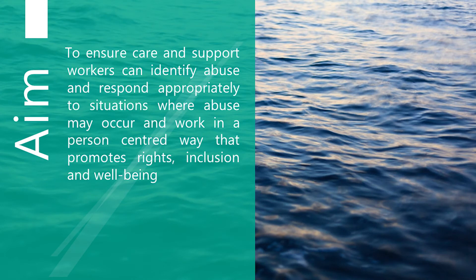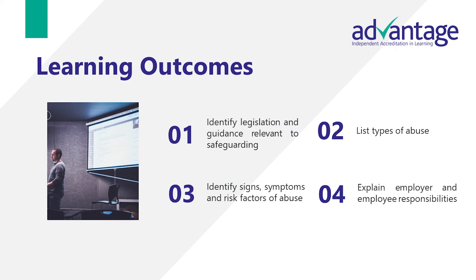The aim of the webinar is to ensure care and support workers can identify abuse and respond appropriately to situations where abuse may occur, and work in a person-centred way that promotes rights, inclusion and well-being. Today's aim is to ensure that you have an understanding as informal carers of these issues. Our learning outcomes are to identify legislation and guidance relevant to safeguarding, to list types of abuse, and to identify signs, symptoms and risk factors of abuse.